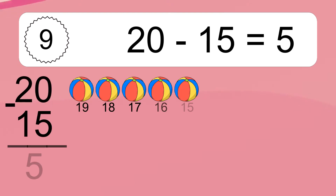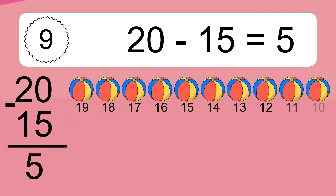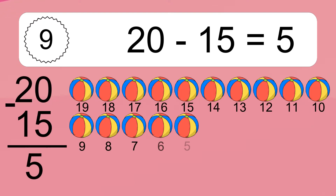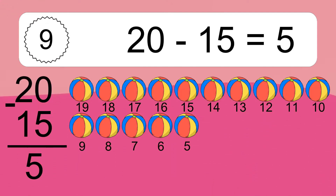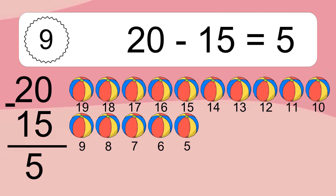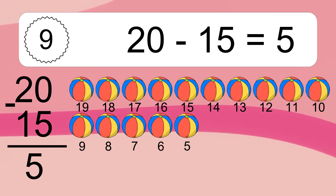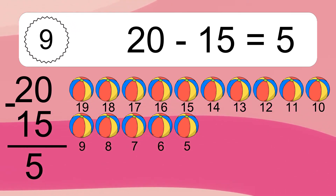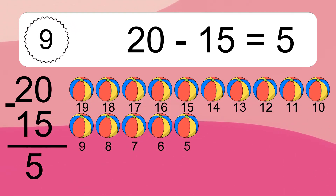20 minus 15 equals 5. Let's count it: 19, 18, 17, 16, 15, 14, 13, 12, 11, 10, 9, 8, 7, 6, 5.